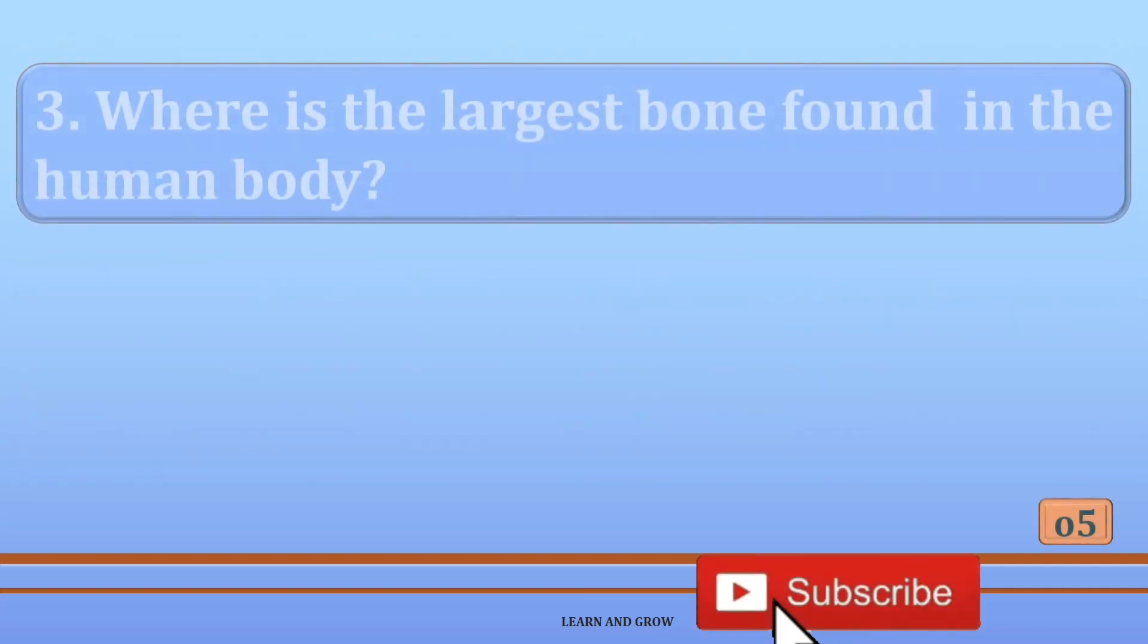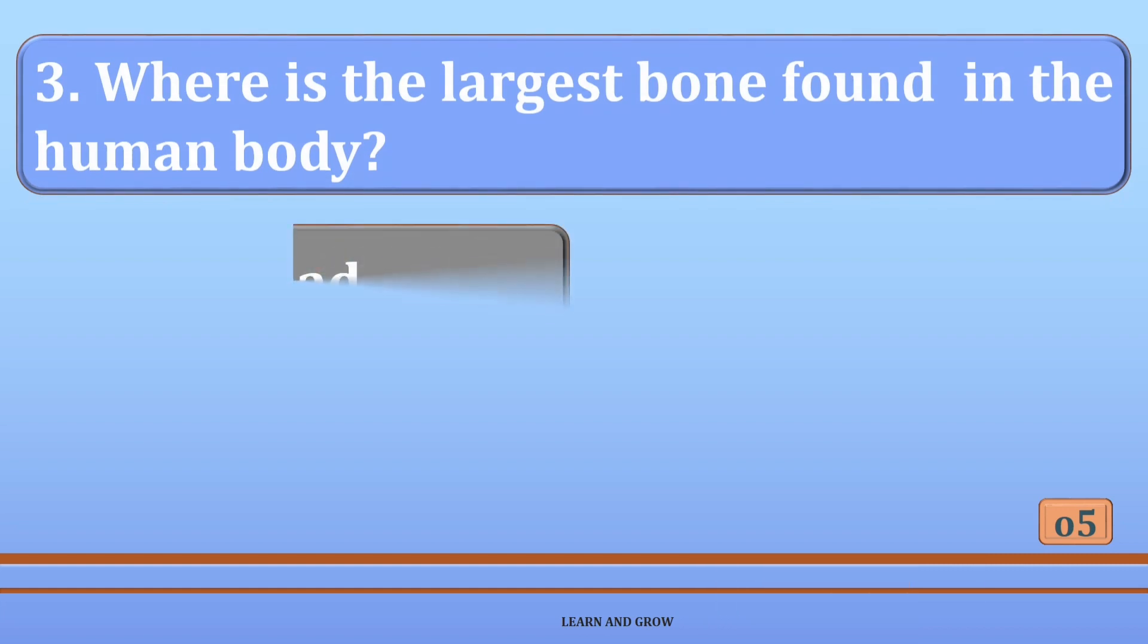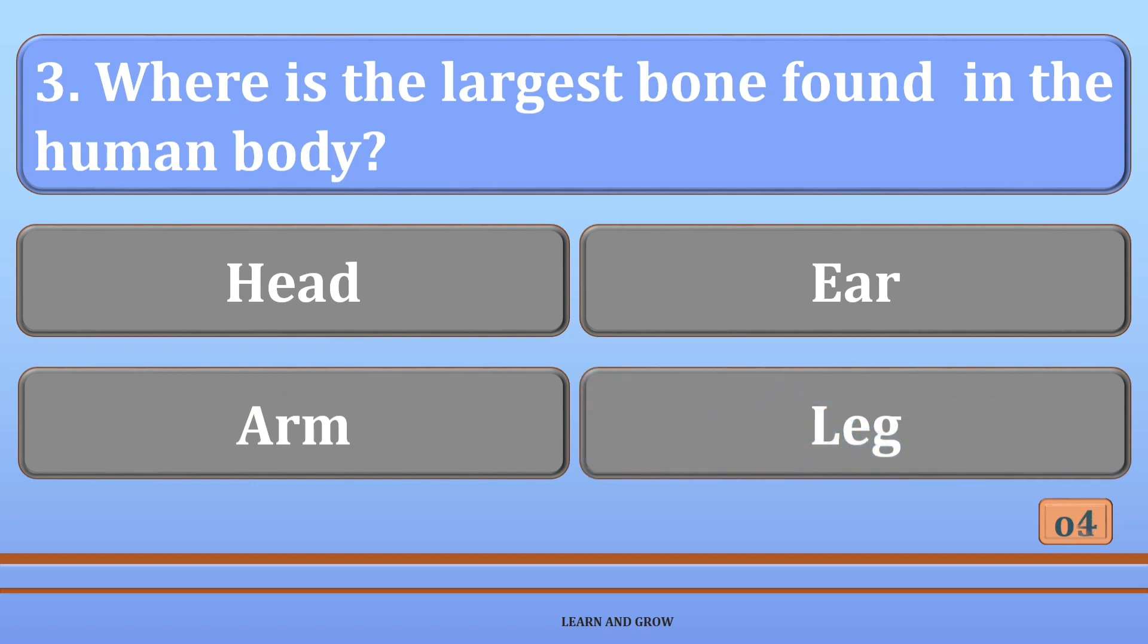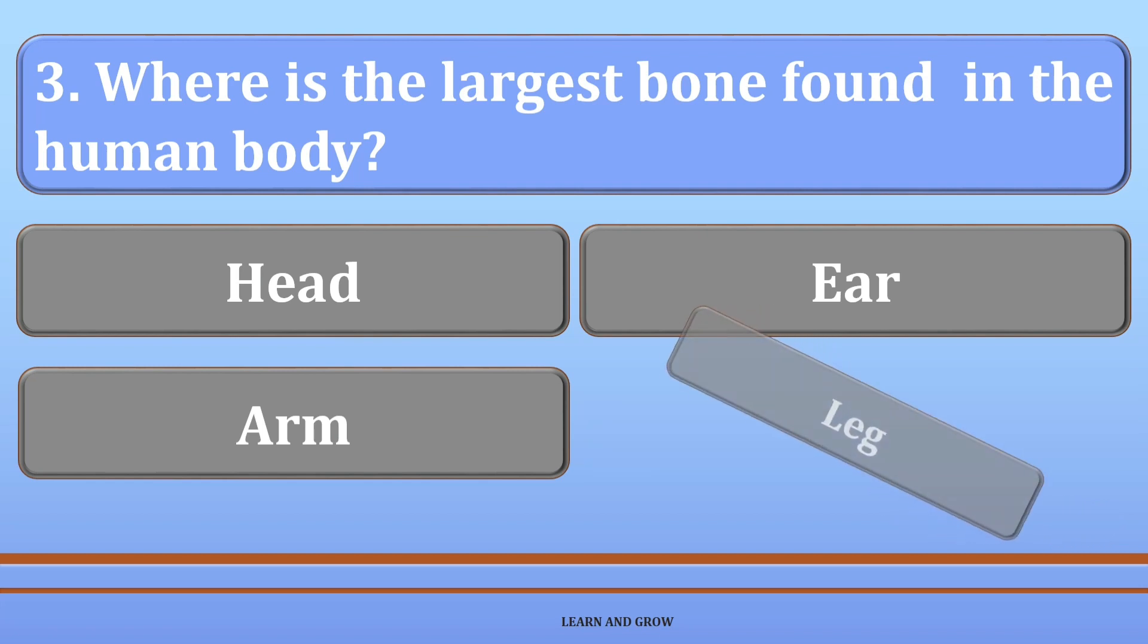Where is the largest bone found in the human body? Options are: A: head, B: ear, C: arm, or D: leg. The right answer is option D, leg.